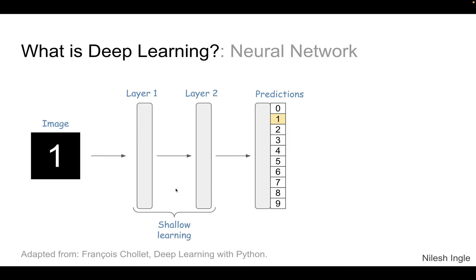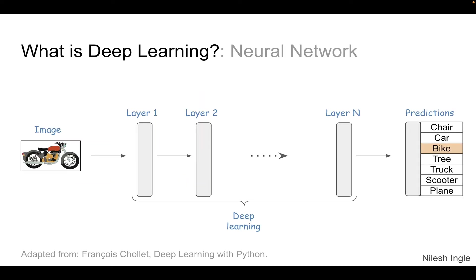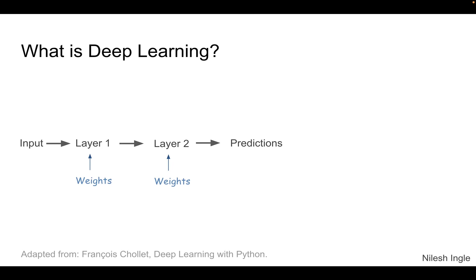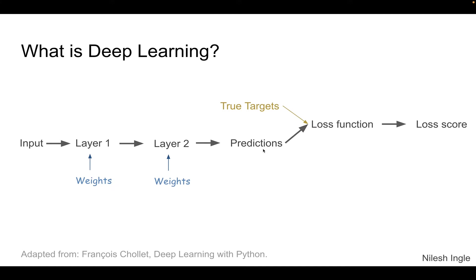With just two or a few layers, the network would be a shallow network — that would be shallow learning. However, if there are much more complicated images, such as a bike image, the layers could become deeper — there could be hundreds of layers within the neural network, and that could be called deep learning. Essentially, you have the input, then the weights for layer one and layer two, and based on that we get the predictions.